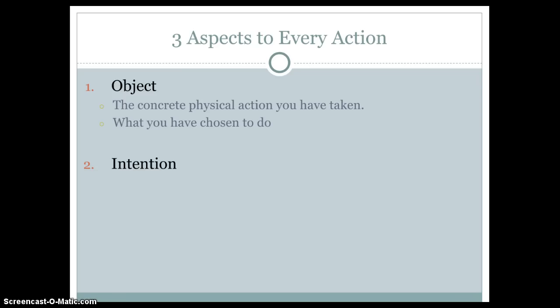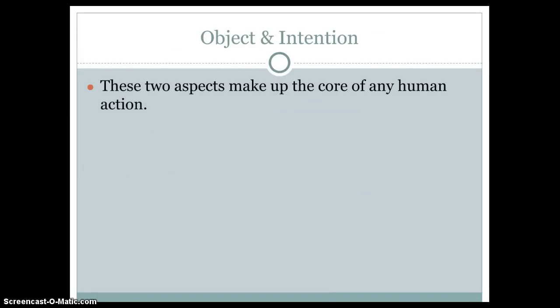The second component of any action is the intention. This is the why — why are you performing this act? What is your motivation? In the bubblegum example, let's say I had bad breath and was going on a date, so the reason I'm stealing the piece of bubblegum is because I want to impress someone I'm dating. In the Sacred Heart example, your intention would be to get into college — a very self-centered, self-motivating intention. The object and intention are the two things we always identify first: what are you doing and why are you doing it?